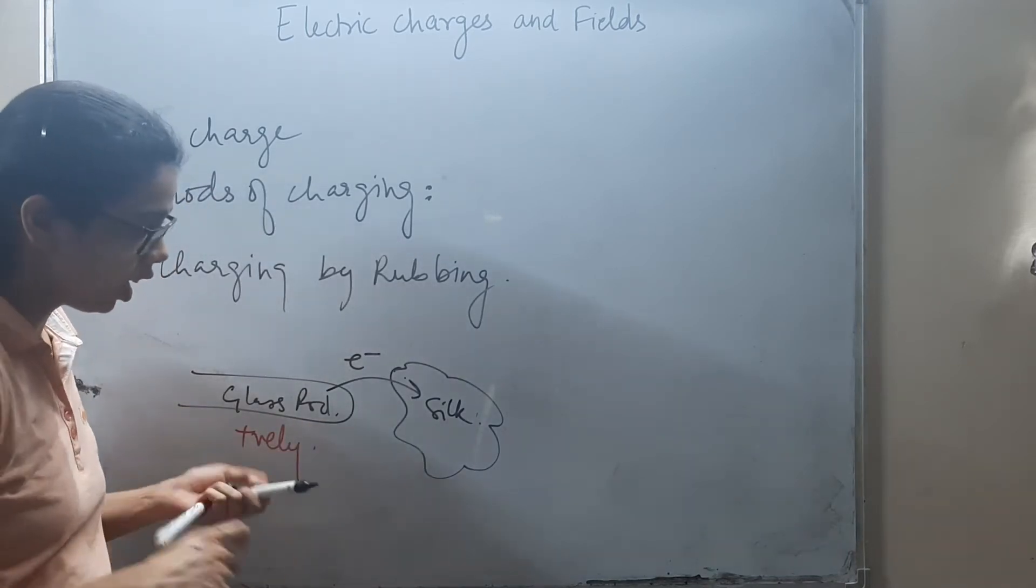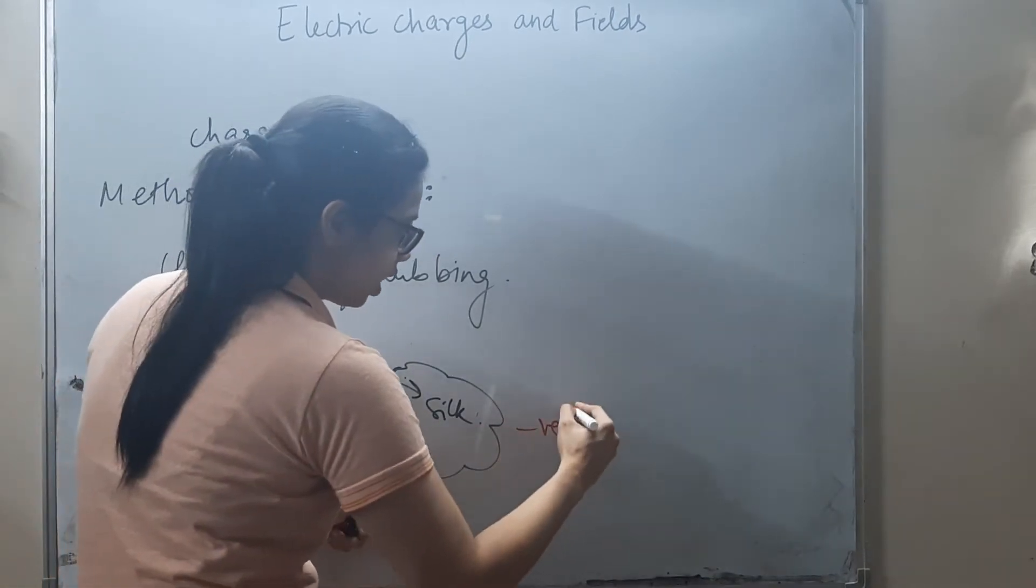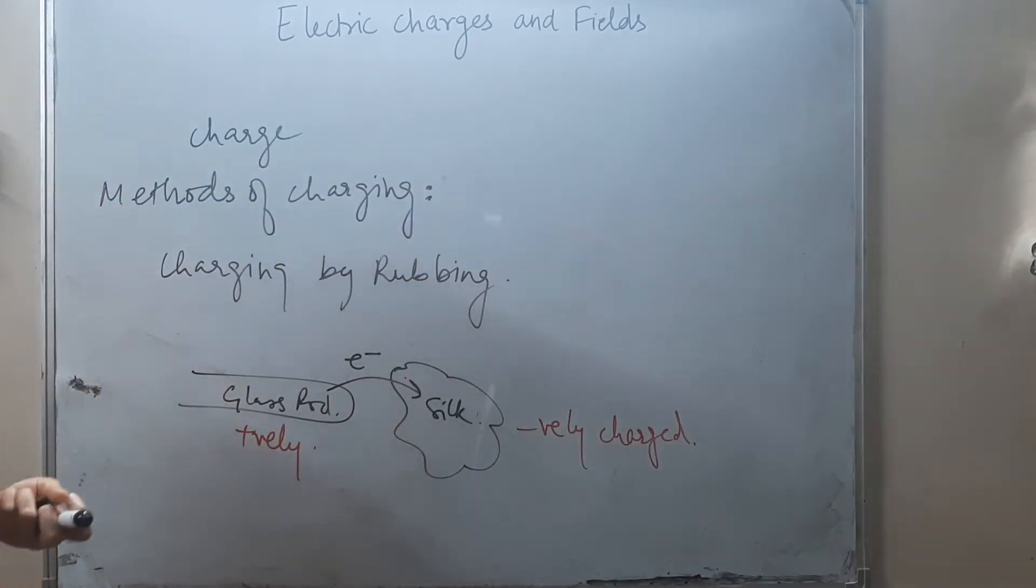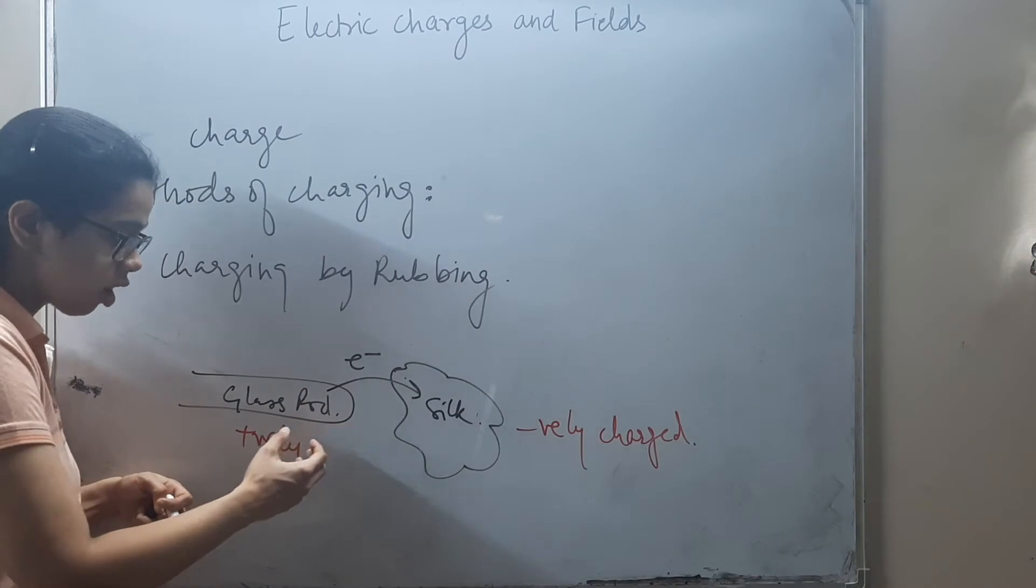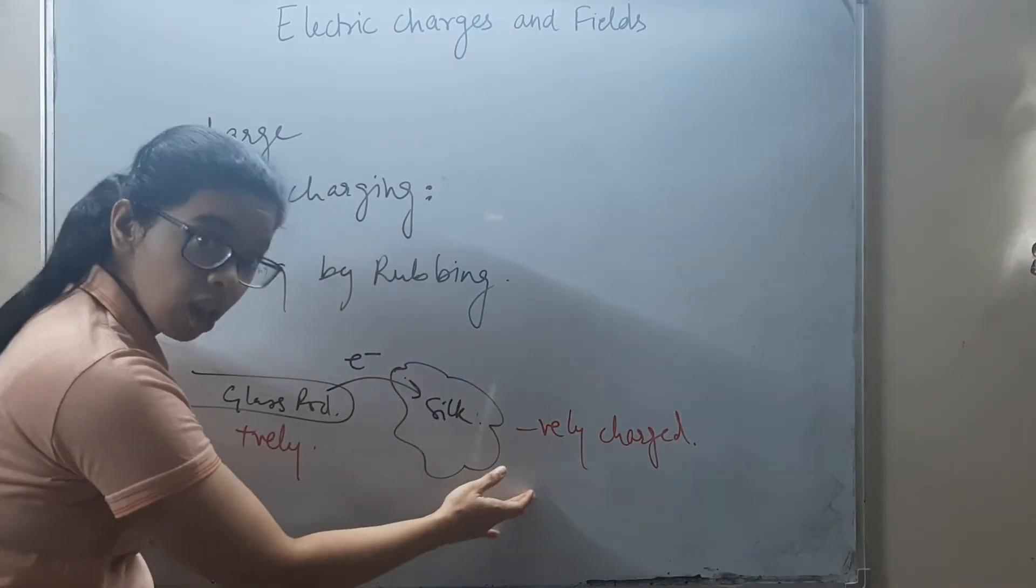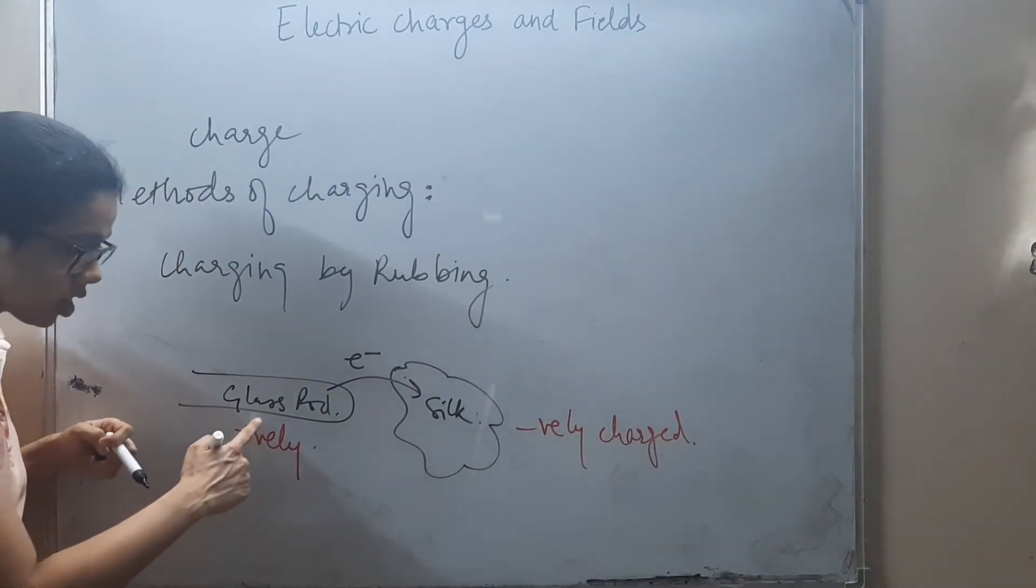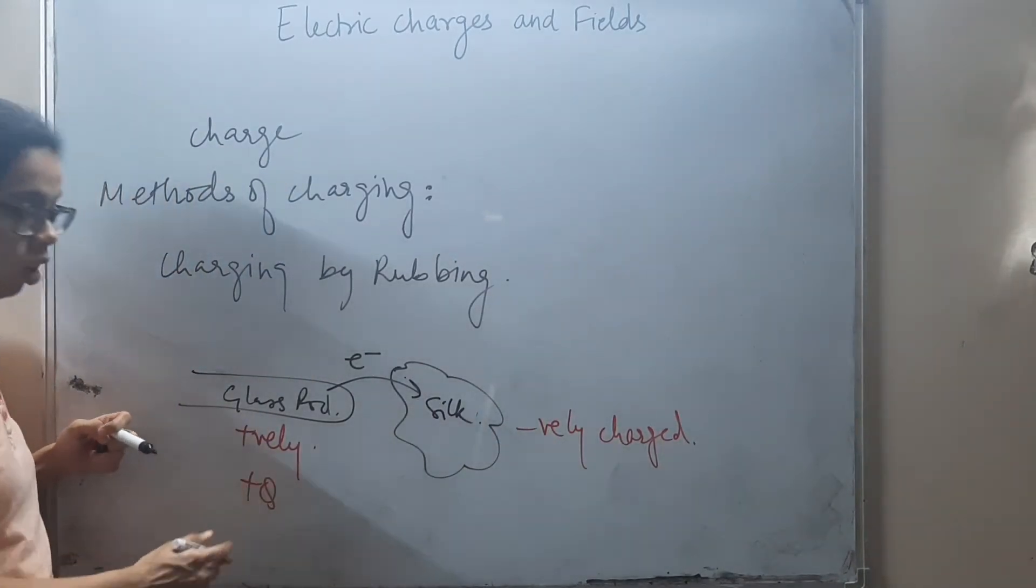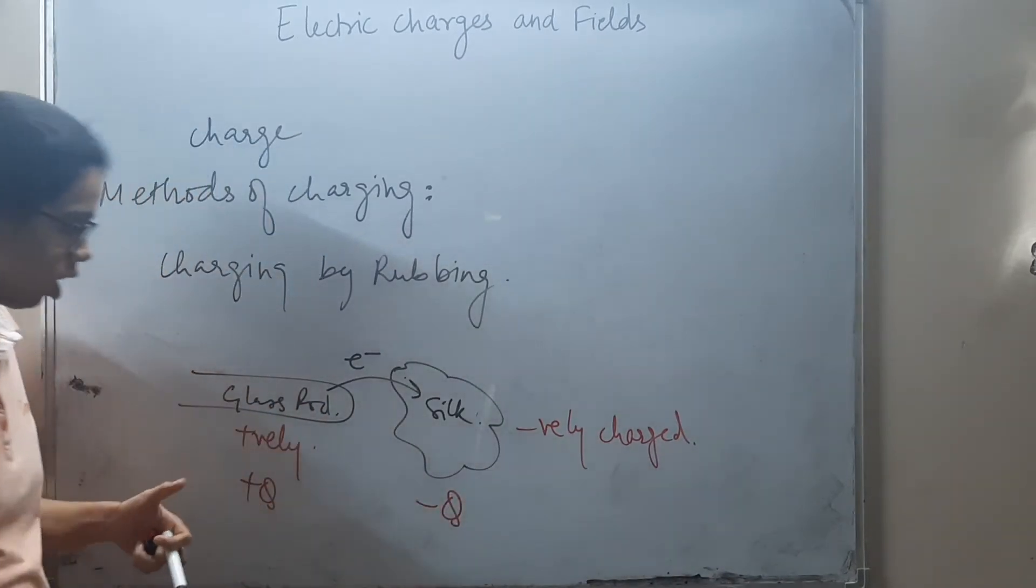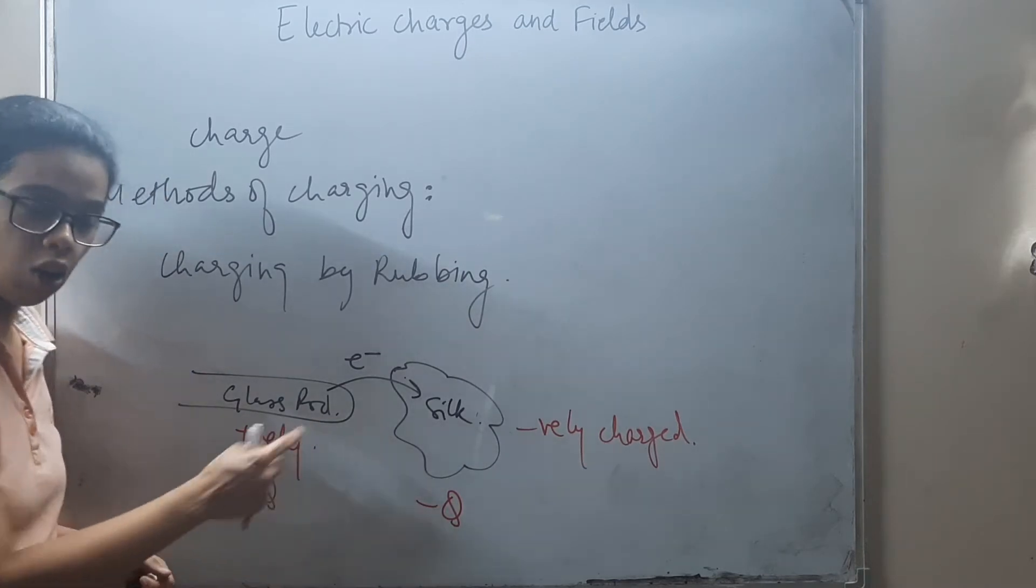If a glass rod is rubbed with silk cloth, the glass rod will lose electrons and become positively charged. The silk cloth will gain electrons and become negatively charged. So if the glass rod takes charge plus Q, then the silk cloth takes charge minus Q.